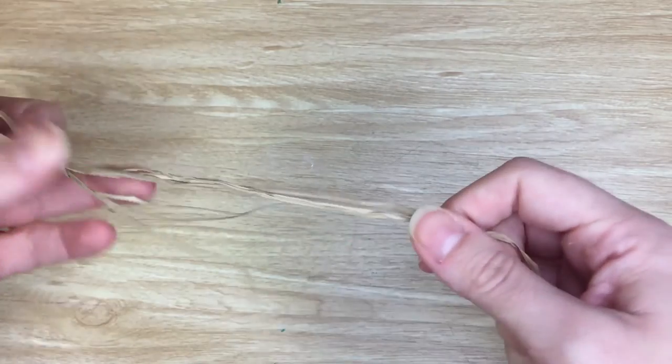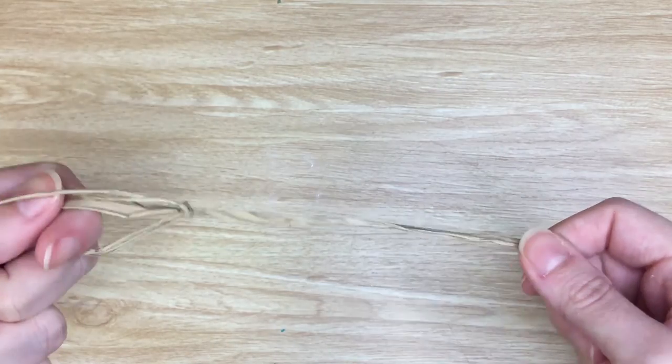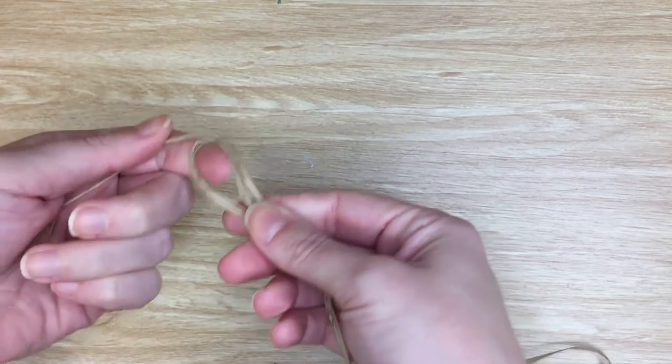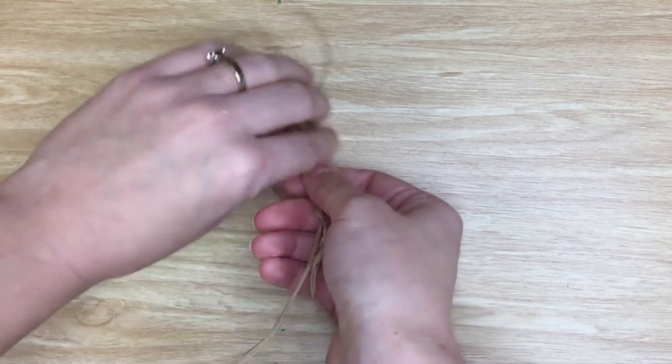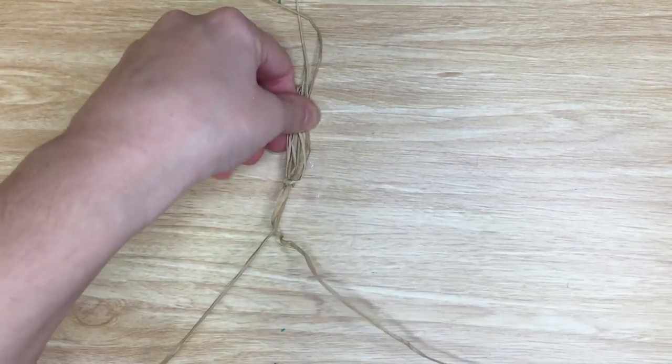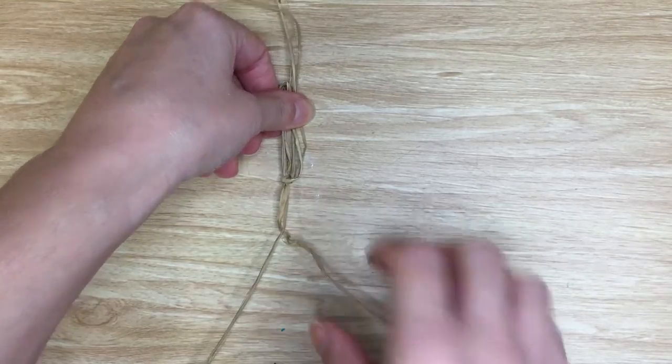This loop is what you're going to have your finger in, or if it's easier for you, you can take that loop and tape it to the table and do your cordage that way.